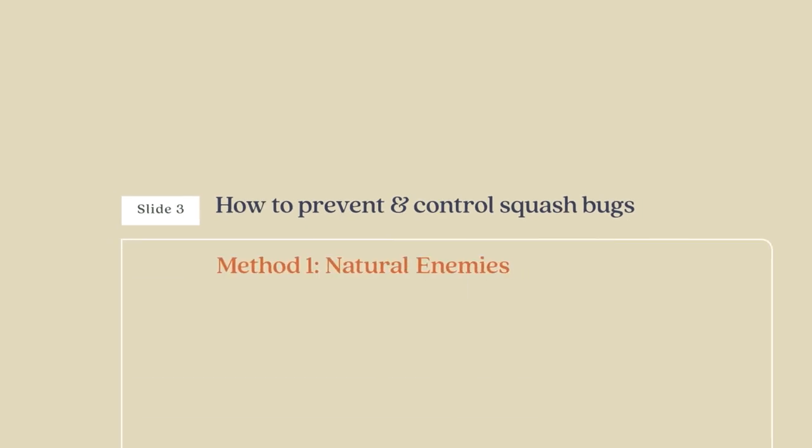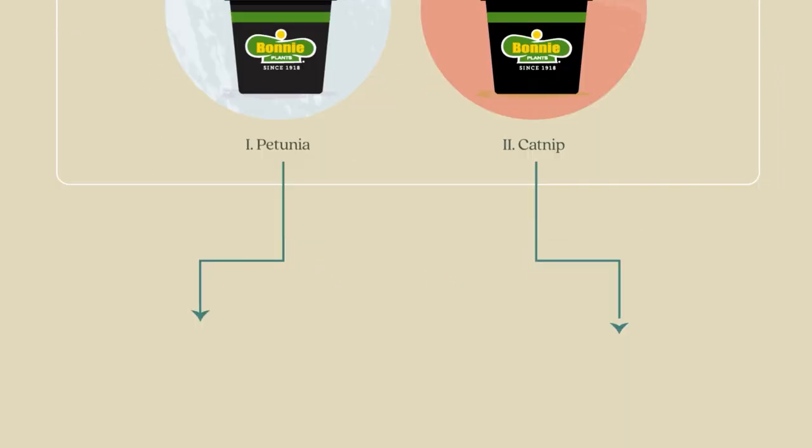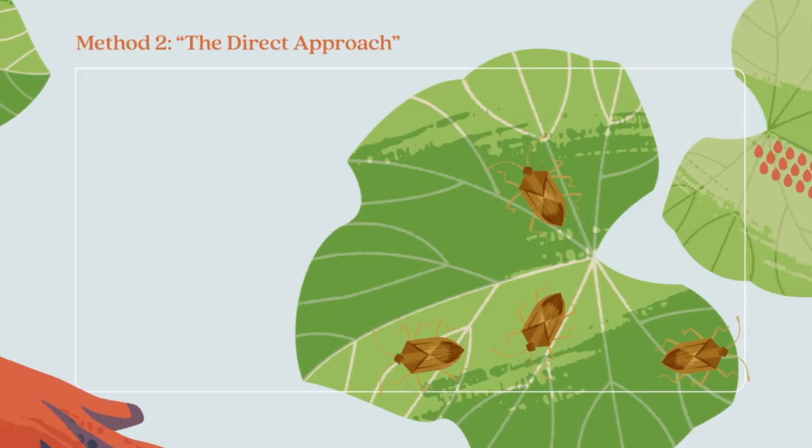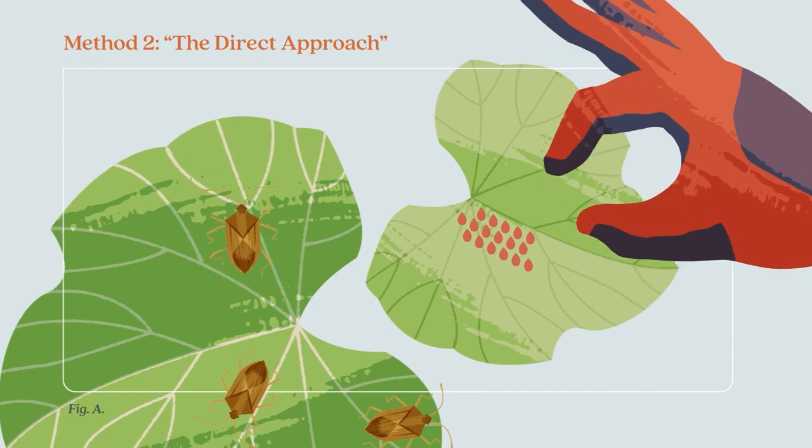How to prevent and control squash bugs. Plant petunia and catnip from Bonnie Plants to deter them. Hand-pick adult bugs and crush any eggs clinging to the undersides of leaves.